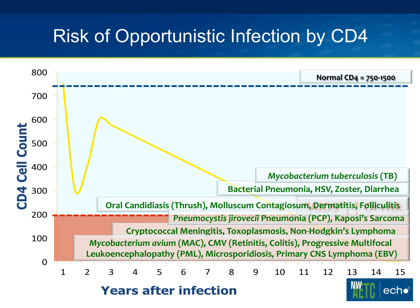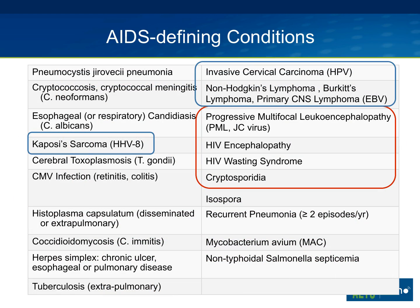Below 200, cryptococcal meningitis, reactivation of toxoplasmosis, and a variety of lymphomas begin to occur. And then at very low CD4 counts, pathogens that really don't have any virulence characteristics — like mycobacterium avium, cytomegalovirus when it causes retinitis, and PML caused by JC virus — don't loom until T cells are less than 50.